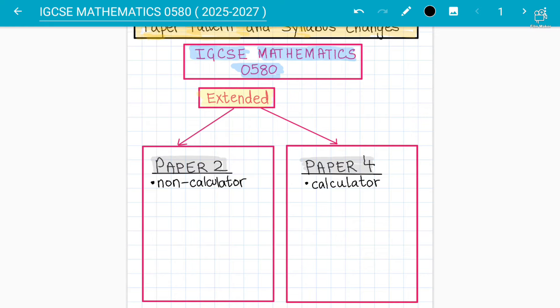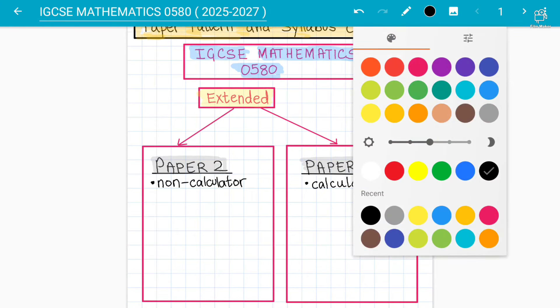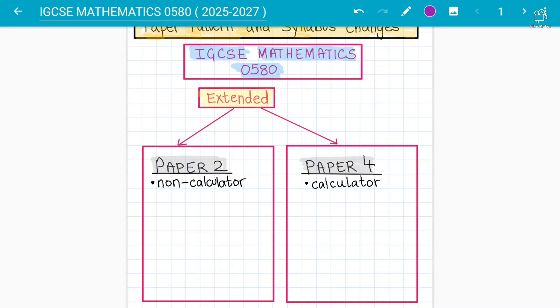Both of them have the same weightage now, so it is 50 percent weightage this one and 50 percent weightage is this one as well. Both of them will have the same weightage, 50 percent, 50 percent. This paper is of two hours now as well, Paper 2 extended and Paper 4 extended will be of two hours.